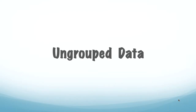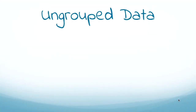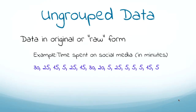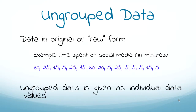We'll talk about ungrouped data first. Data in its original form, or what we call the raw form without any changes, is called the original data. For example, times in minutes spent on social media make up the raw data. Ungrouped data is always given to us in individual data values.